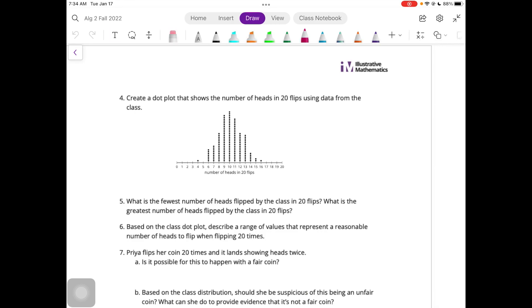Then it says to create a dot plot that shows the number of heads in 20 flips using data from the class. So here is a sample of some data that we could have collected from an entire class. What is the fewest number of heads flipped by the class in 20 flips? So the smallest number is that four there. Four is the fewest. And then it says what is the greatest. 16 is the greatest. Now this data could vary depending on what data comes out of all of those flips. Based on the class dot plot, describe a range of values that represent a reasonable number of heads to flip when flipping 20 times. Four is kind of an outlier because you don't even get any fives.